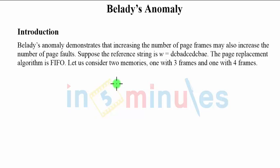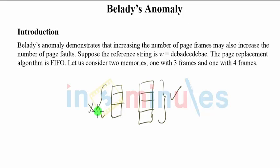The concept works something like this: if you plan to have memory with three frames and then memory with four frames, we all expect that this would produce a better result compared to this one. But sometimes it doesn't, it works reverse way. Just by increasing memory, we can decrease the performance. And that's the reason it is known as Belady's Anomaly.